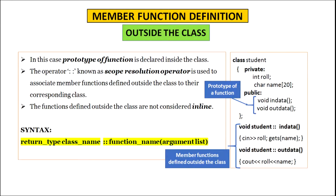Defining the member function outside the class: in this case, the function prototype is declared inside the class, and the scope resolution operator (double colon ::) is used to associate member functions defined outside the class to their corresponding class. The syntax is: return_type class_name::function_name(argument list). For example, in class student, the public section contains only the function prototypes void in_data and void out_data. After completing the class, the definitions are given as void student::in_data and void student::out_data followed by the body of each function.